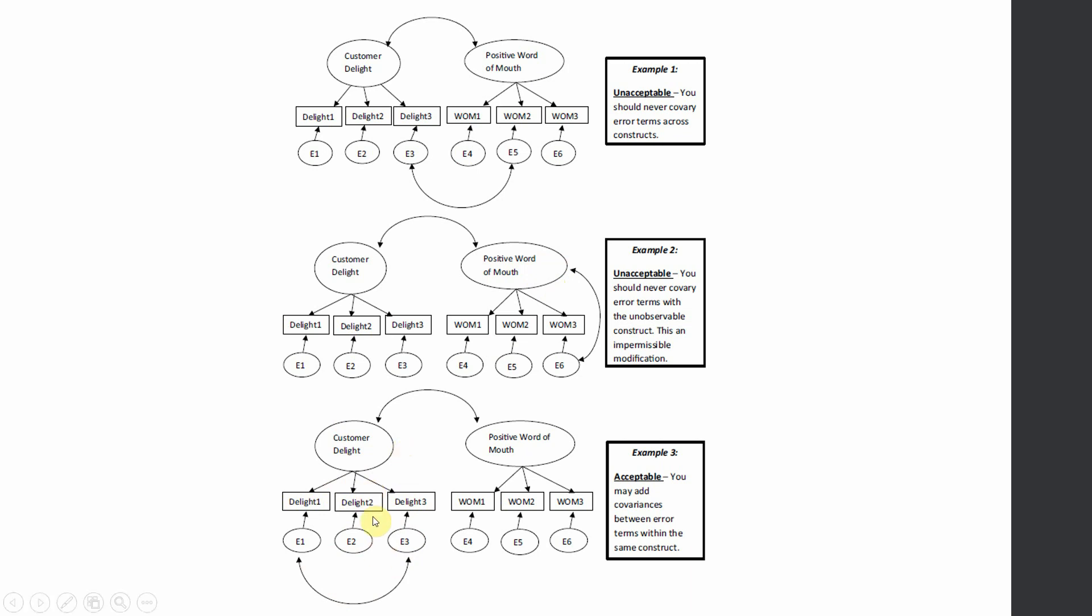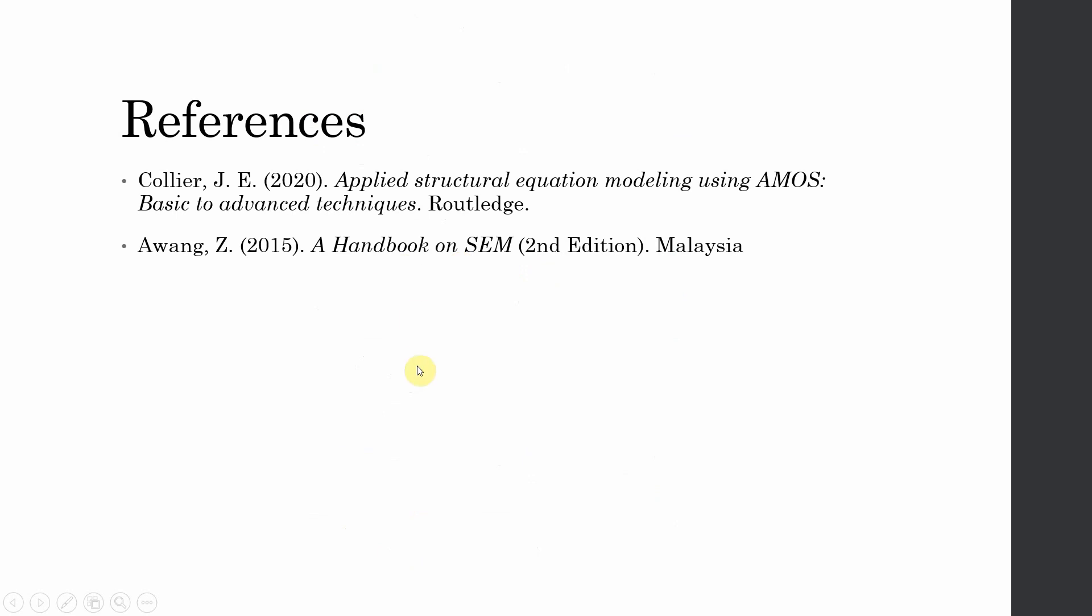You can only draw covariance between error terms of a single construct. This is allowed, and you can do this to improve the model fit. These are the references that can help you further understand these concepts. Thank you very much.